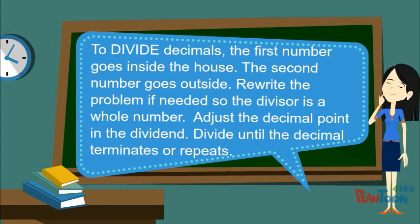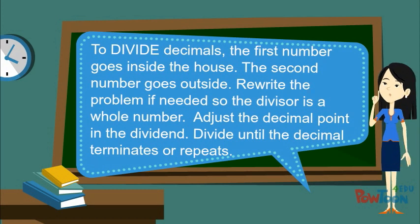To divide decimals, the first number, or the dividend, goes inside the house. The second number, the divisor, goes outside. We rewrite the problem if needed so that the divisor is a whole number. We then adjust the decimal point in the dividend the same number of places. We divide until the decimal either terminates or repeats.